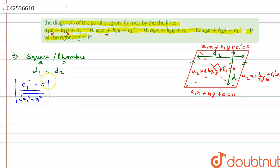And d2 will come out to be c1 minus c1 dash by root of a2 square plus b2 square.